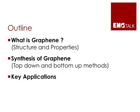The outline of my talk is as follows. I'm going to speak about what is graphene, what is the structure of graphene, how do we manufacture graphene. There are two ways of doing it: bottom-up and top-down. I'll talk about both methods, and I'll discuss some of the key high-impact applications of graphene.